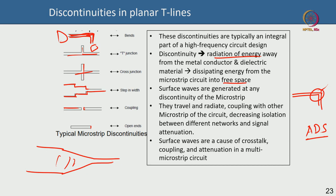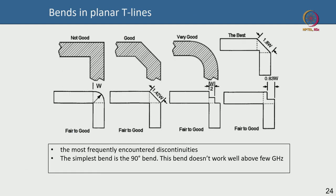Cross-talk, coupling, and attenuation are also critical in microwave circuits, since many lines may criss-cross through a dielectric or run parallel to each other. Significant coupling between two parallel lines causes cross-talk, which reduces isolation between lines and between devices or networks. All of this must be taken into account when designing an RF circuit.